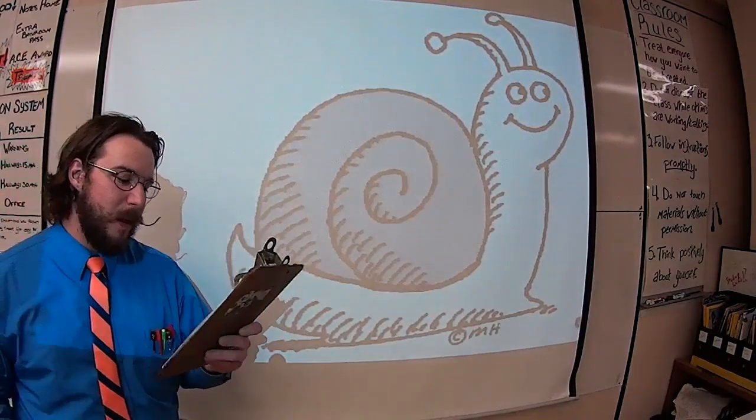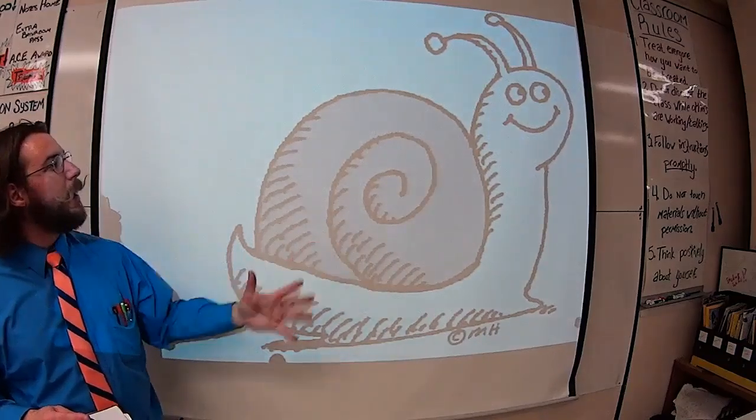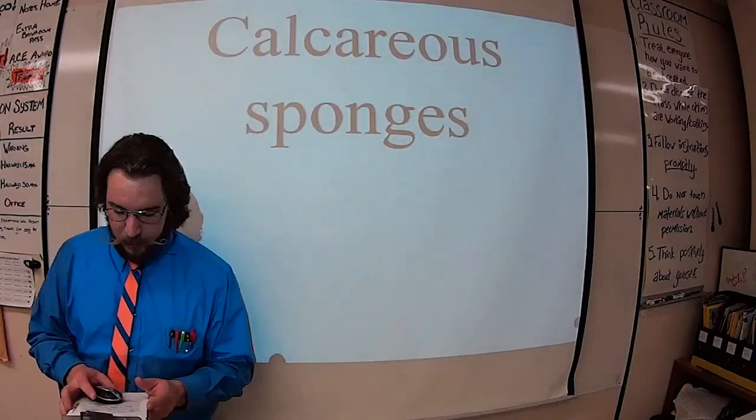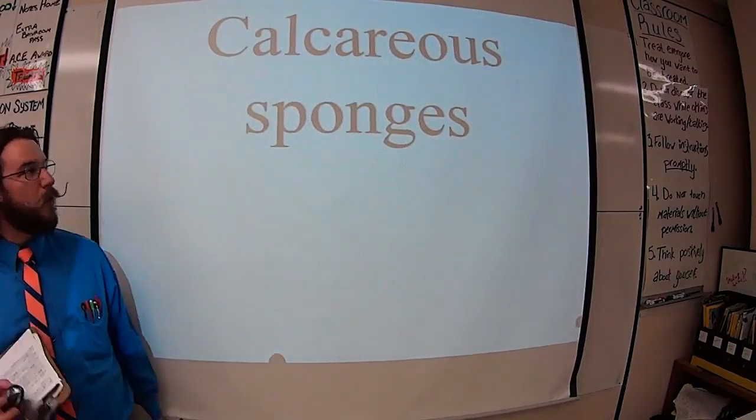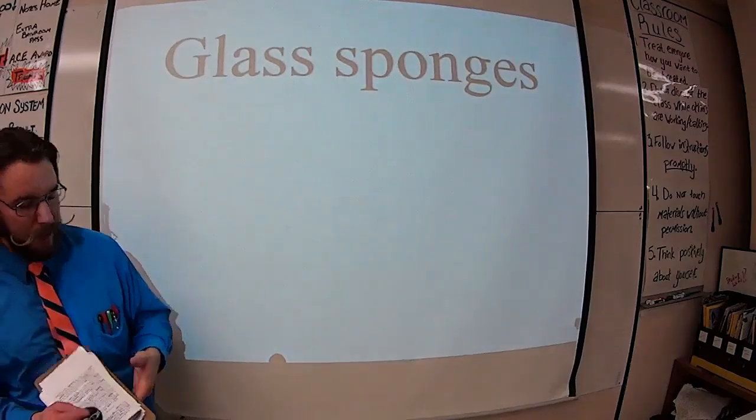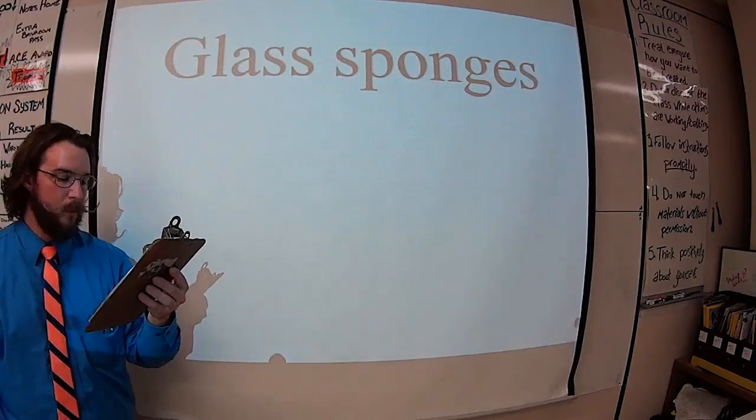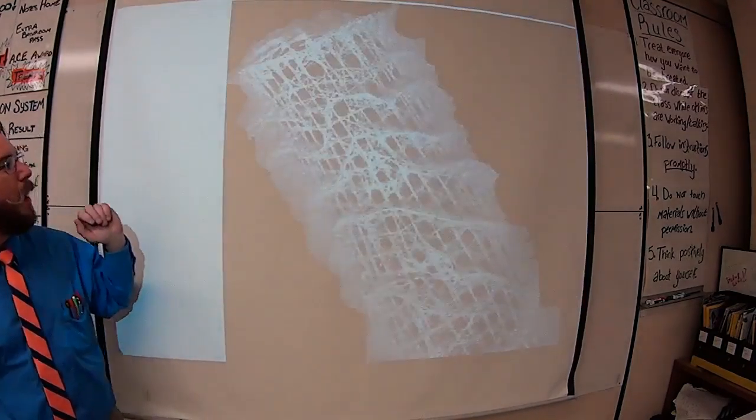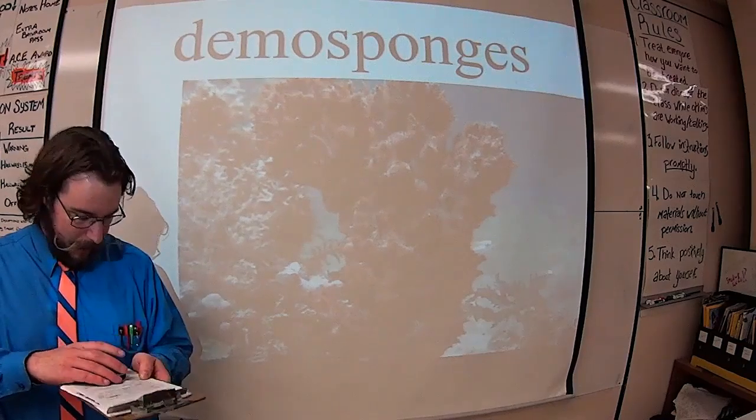There are three main types of sponges based on their skeleton structure. There are ones that have more calcium carbonate. And those are called calcareous sponges. There's also those that have more silica. Looks like glass. And they are called glass sponges. And in addition to that, there are also demosponges, which are like sort of halfway in betweeners.